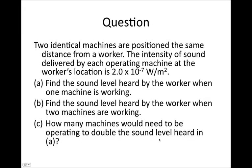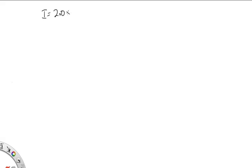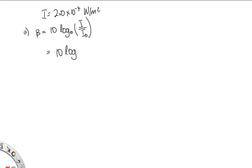Here's a question to try. Two identical machines are positioned the same distance from a worker. The intensity of sound delivered by each operating machine at the worker's location is 2 × 10⁻⁷ watts per meter squared. Find the sound level heard by the worker when one machine is working. To answer part A, we substitute into the expression: the sound level equals 10 log base 10 of I over I₀, which is 10 log(2 × 10⁻⁷ / 10⁻¹²), giving 53 decibels.